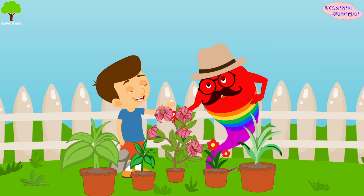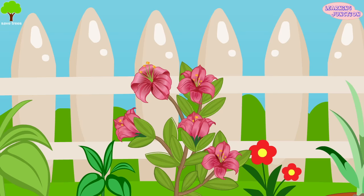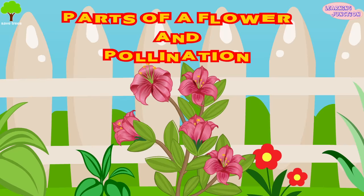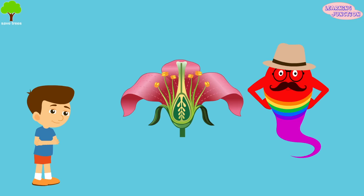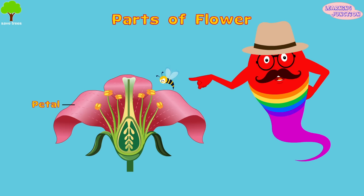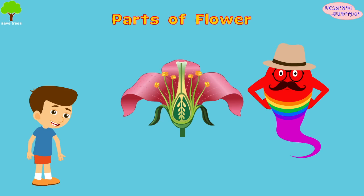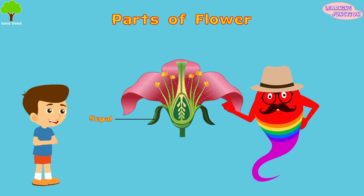Hey buddy! Wow, pretty colors and lovely smell! Let's learn about the parts of a flower and pollination. Petals give a flower its unique shape and are often brightly colored to attract creatures and insects.